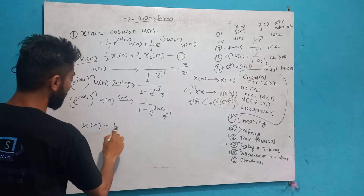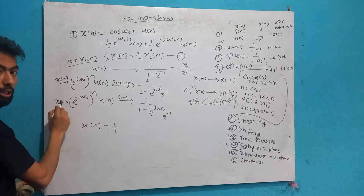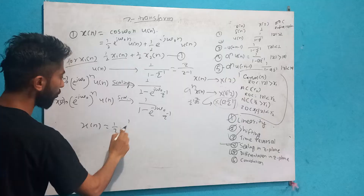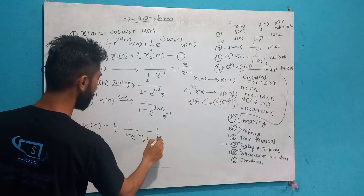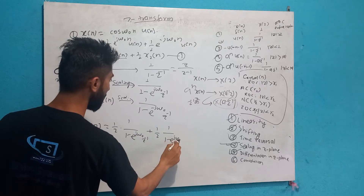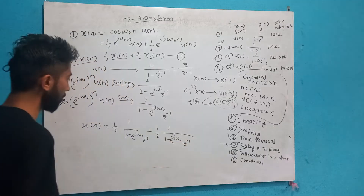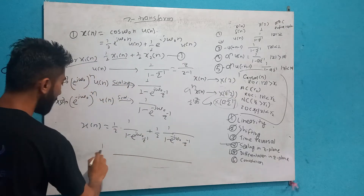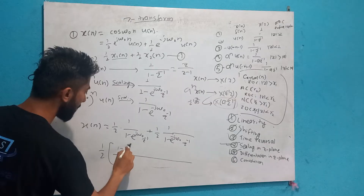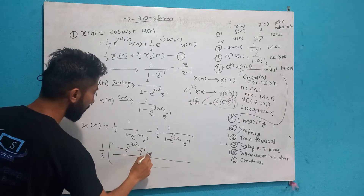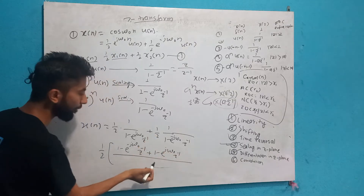So we are going to have an example. 1 by 2, times 1 by (1 minus e to the power j ω₀ · Z inverse), plus 1 by 2, times 1 by (1 minus e to the power minus j ω₀ · Z inverse). This one — I am saying that anyway, this will have a whole edition of 1 by 2. We will write 1 by 2, times (1 minus e to the power j ω₀ · Z inverse), plus this multiply by (1 minus e to the power j ω₀ · Z inverse). The sign minus will be the change.